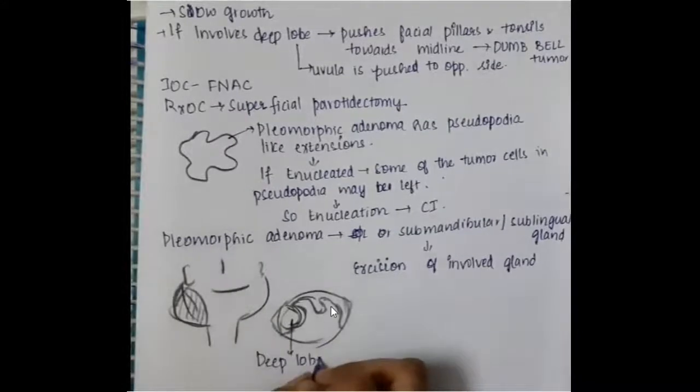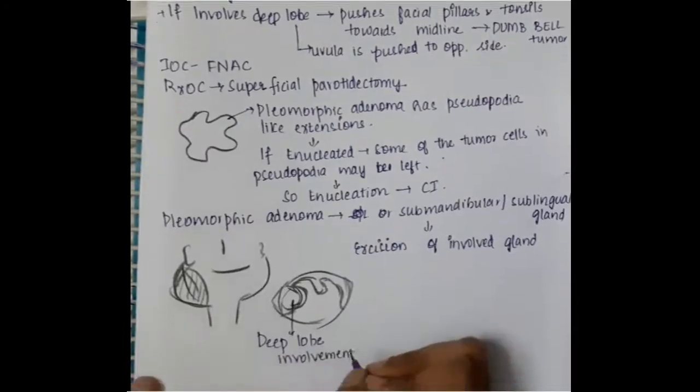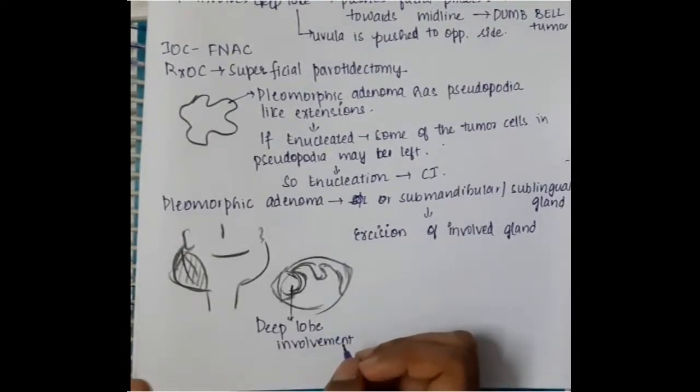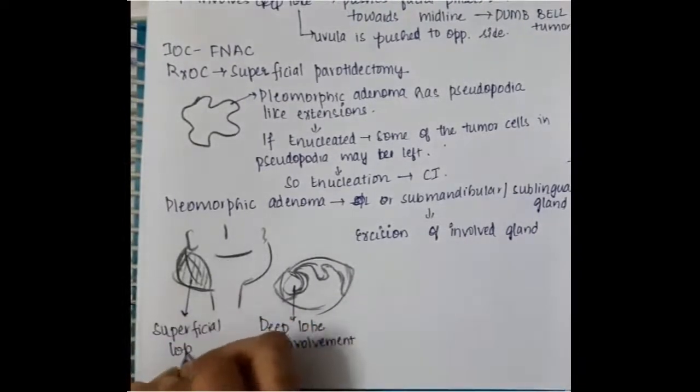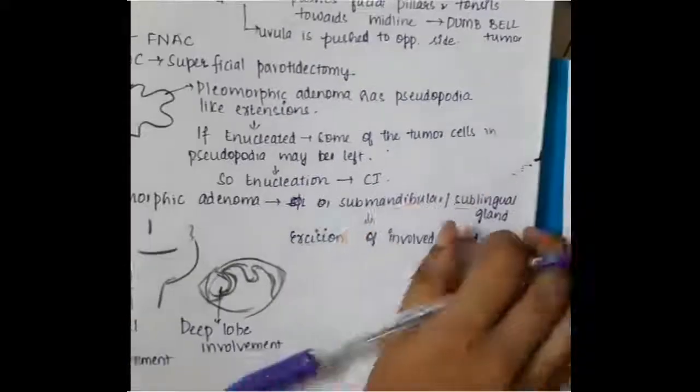If the deep parotid lobe is involved, here in this picture, if there is deep parotid lobe involvement, then you will see that these are the facial pillars and here you will have tonsils, these are pushed towards the midline and even this uvula is also pushed towards the opposite side. These are seen in deep lobe involvement. Then, we will have to see this is the superficial lobe involvement. You will see the symptoms externally.